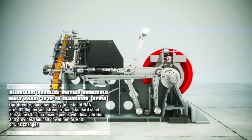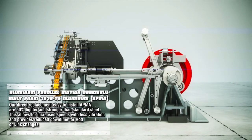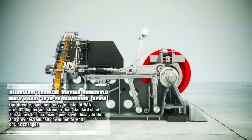The aluminum parallel motion assembly is built from 7075 T6 aluminum. Our direct replacement is easy to install and is 50% lighter and stronger than standard steel. This allows for increased speeds with less vibration and provides reduced downtime for rod and link changes.